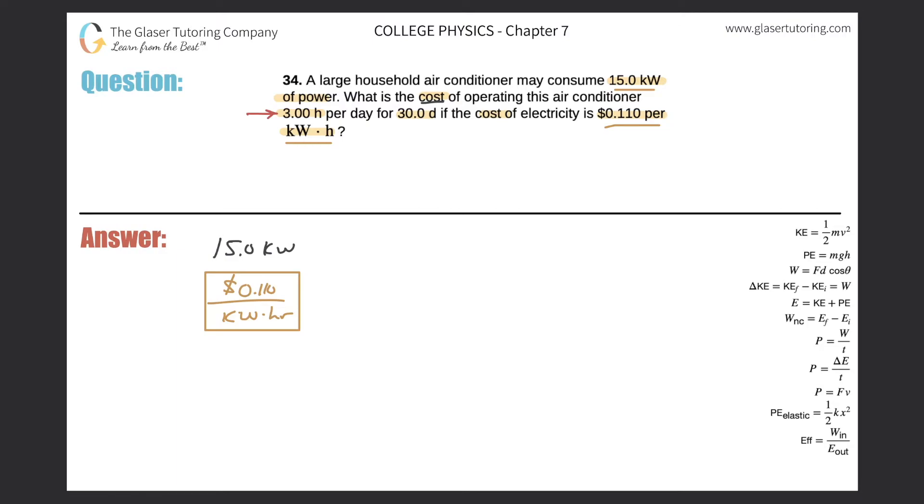Think about what's the total amount of hours. If you're operating it for three hours per day and you're going to operate it for 30 days, how many total hours would that be? It would simply be 90 hours. We're basically taking three hours and multiplying it by 30, which gives us 90 hours.